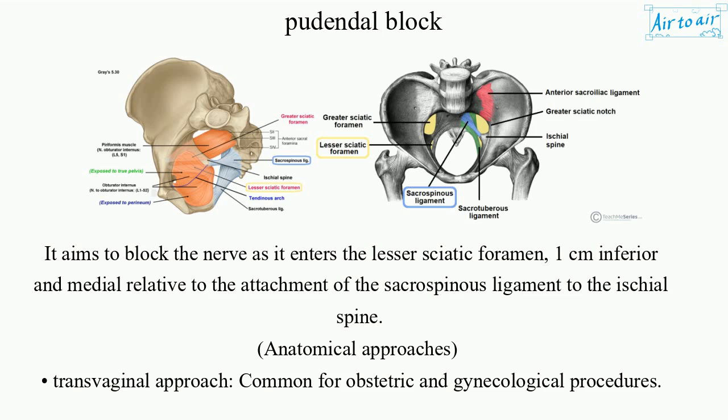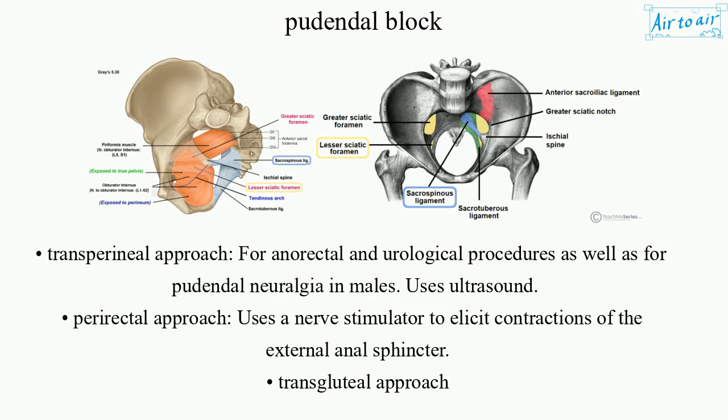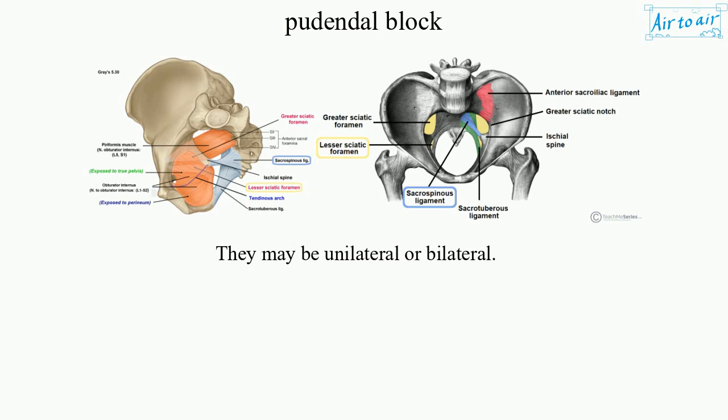Anatomical approaches include: the Transvaginal Approach, common for obstetric and gynecological procedures; the Transperineal Approach, for anorectal and urological procedures as well as pudendal neuralgia in males, which uses ultrasound; the Pararectal Approach, which uses a nerve stimulator to elicit contractions of the external anal sphincter; and the Transgluteal Approach. These may be performed unilaterally or bilaterally.